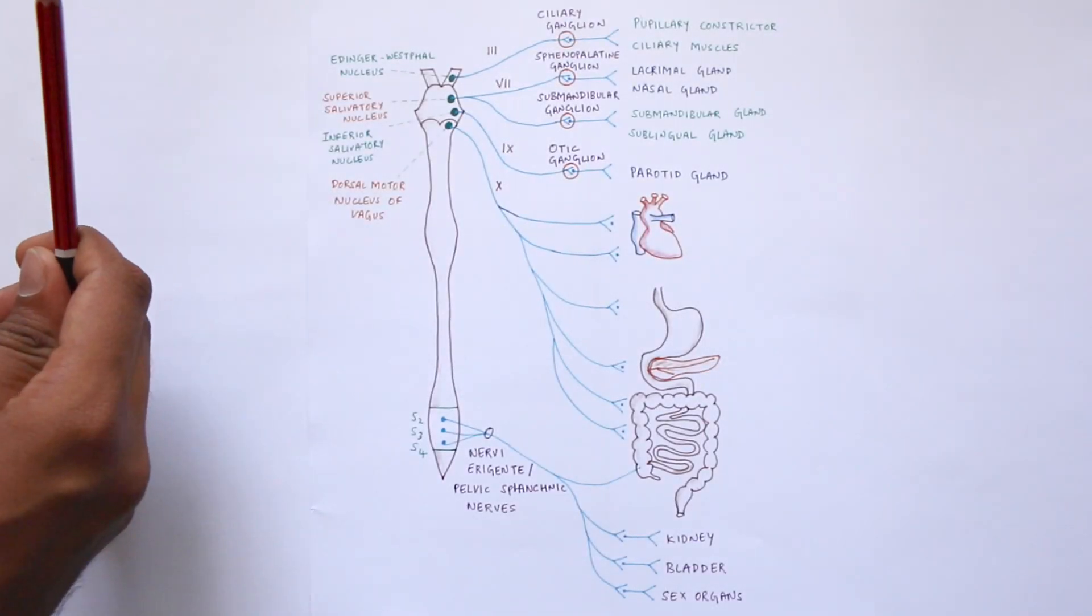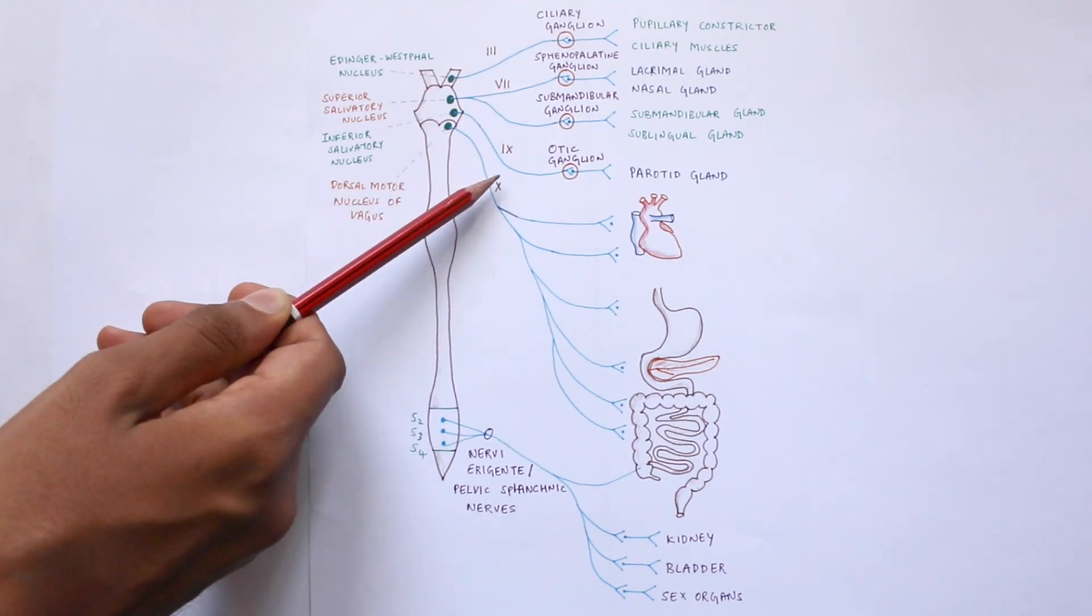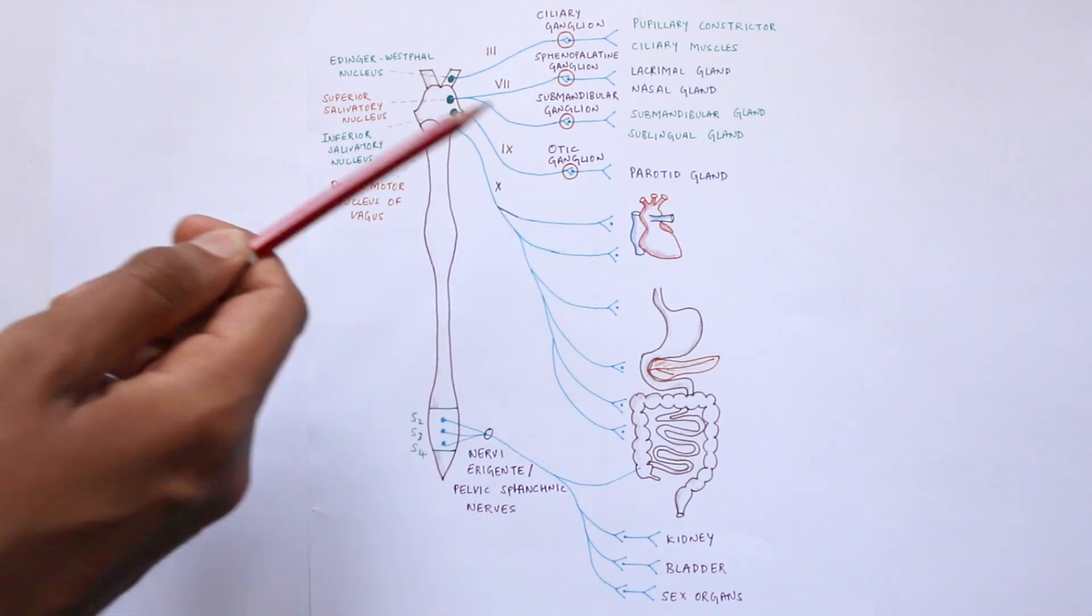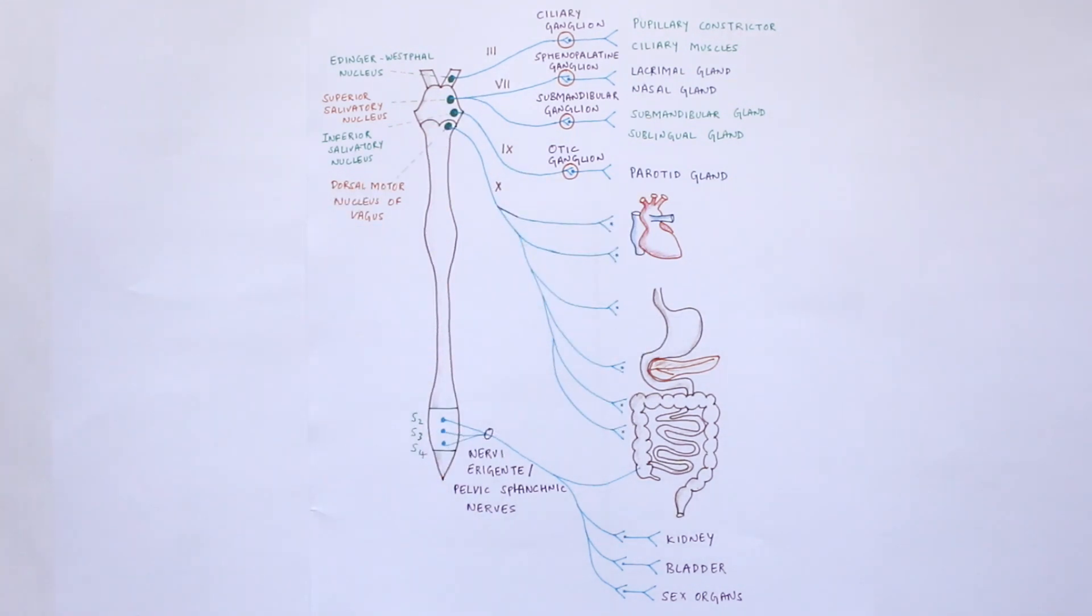The ganglia in the cranial outflow are four in number and are associated with the cranial nerves 3, 7, 9, and 10. They regulate the activity of the pupil, the salivary gland, the nasopharyngeal muscles, and some thoracic and abdominal viscera. The sacral outflow forms a group of nerves known as the nervae erigentes because they cause penile erection and supply other pelvic viscera.